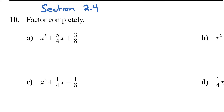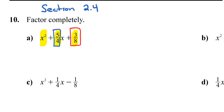Let's move on to question number 10 from section 2.4. For the problems on question number 10 we are still factoring, but now we're dealing with problems that have fractions. We still have three terms, so our goal is to find two numbers that multiply to the last number and those two numbers need to combine to the middle number. That part remains the same - we're just dealing with more difficult numbers.